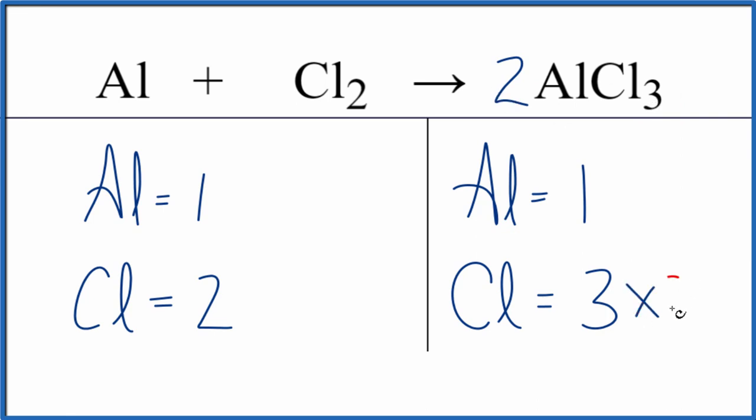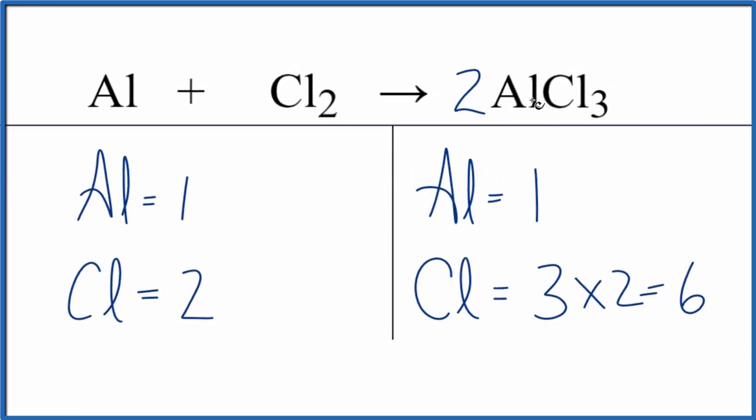One times two gives us two, but that's going to be easy to fix because aluminum is by itself. We change the aluminum, nothing else changes. So let's just put a coefficient of two in front of aluminum.